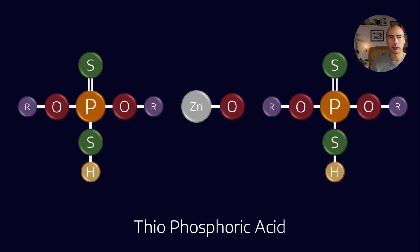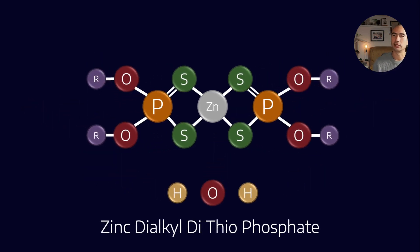So when you react thiophosphoric acid with zinc oxide, what you get is zinc dialkyl dithiophosphate as well as a water molecule. So that's why you'll sometimes hear it referred to as a zinc salt.